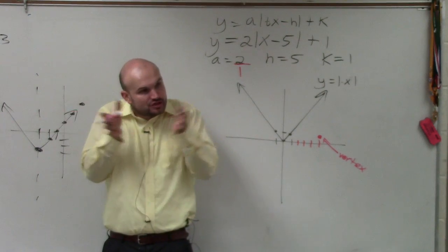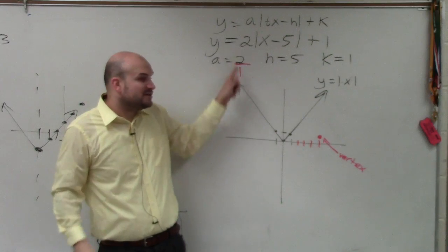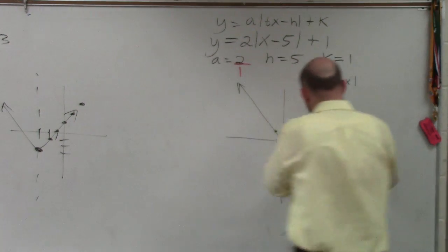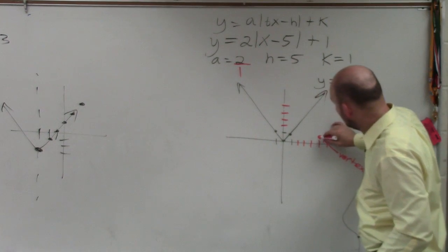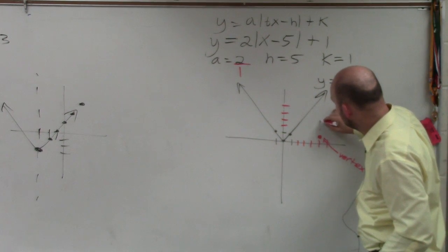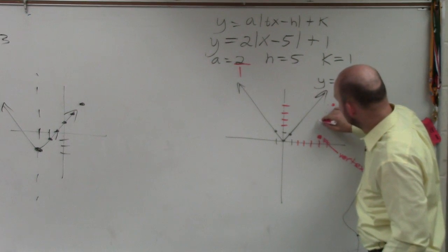A, remember, is shrinking my graph horizontally. So we can represent that by treating that like the slope of our lines. So from our vertex, I'm going to go up 2, over 1, up 2, over 1, up 2,